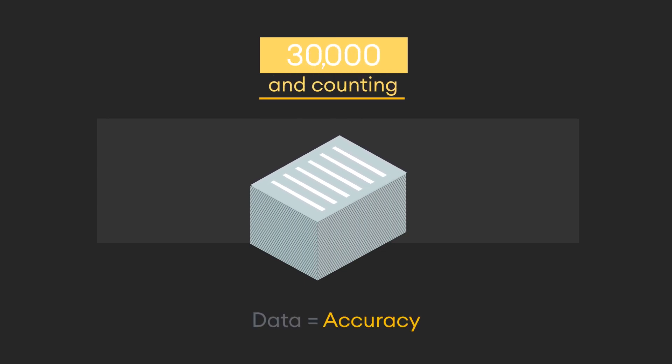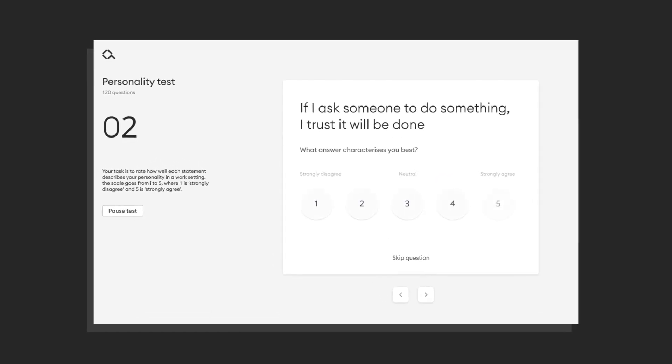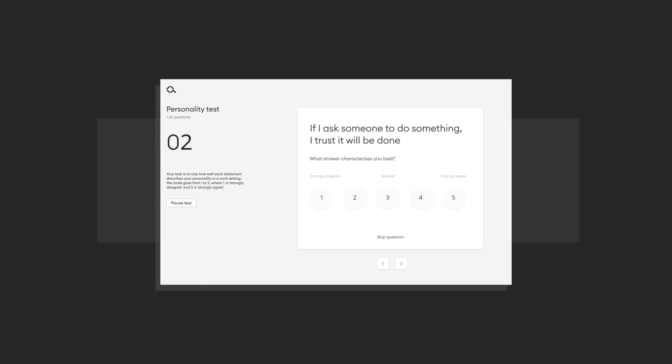Alva's norm group is based on 30,000 results and counting. The more data we get, the more accurate our tests become. The result: a dynamic, constantly improving, and highly accurate test that can be easily implemented, completed, and interpreted, all within a few clicks.